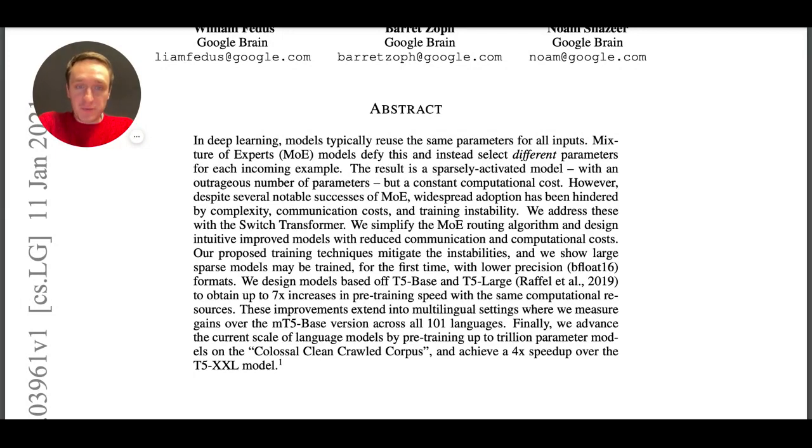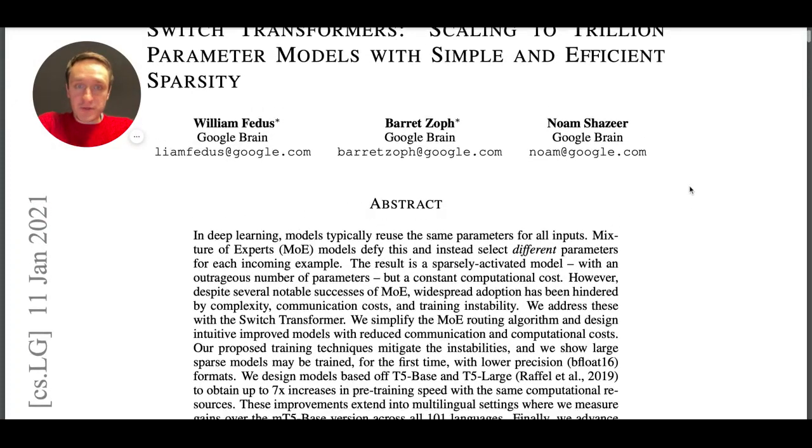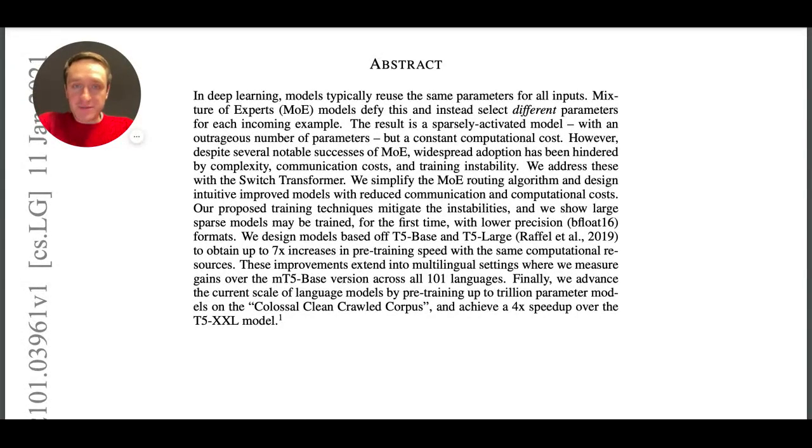They have trained a model which has 1.6 trillion parameters, which is an absurd number. They used a supercomputer to train that. They showed that the results they got are four times better than with T5. The largest version of T5 was something like 11 billion parameters.